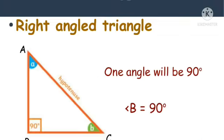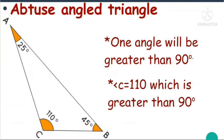Next is the right angle triangle. In this, one angle will be a right angle. If you see this triangle, one angle is 90 degrees, so these types of triangles are called right angle triangles. The last one is the obtuse angle triangle — in this, one angle will be obtuse, that is above 90 degrees. These types of triangles are called obtuse angle triangles.